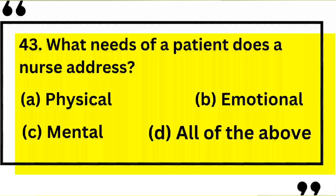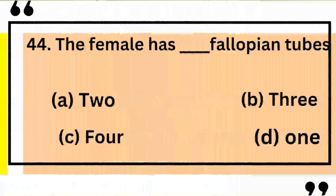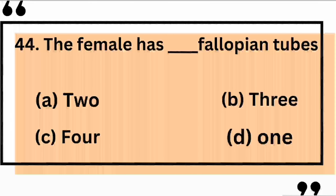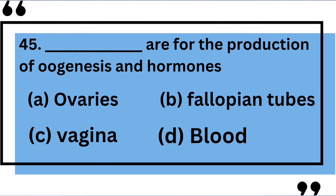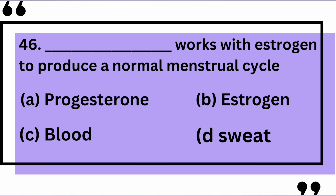What needs of a patient does a nurse address? The correct answer is D: all of the above. The female has how many fallopian tubes? The correct answer is A: 2. The ovaries are responsible for the production of eggs and hormones — yes, the correct answer is A: ovaries. What works with estrogen to produce a normal menstrual cycle? The correct answer is A: progesterone.